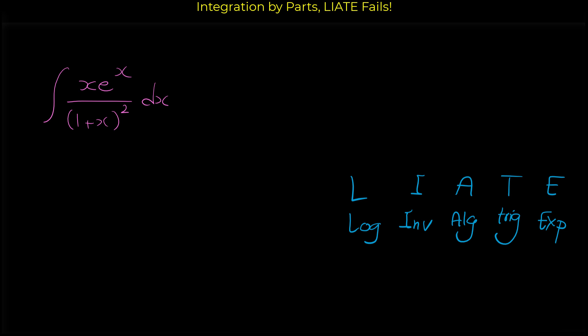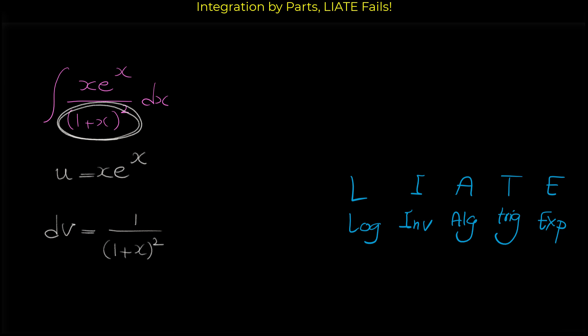So what is u in this tricky question? If you choose u as x e to the x, and you choose dv as 1 over 1 plus x to the 2 — note that the 1 plus x squared in the denominator means dv is 1 over 1 plus x squared. Don't forget, when you choose dv, dx is always part of dv.